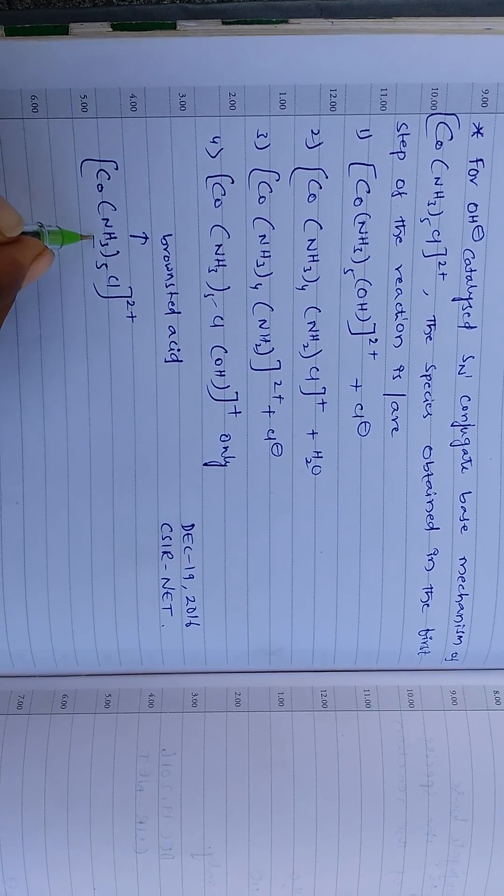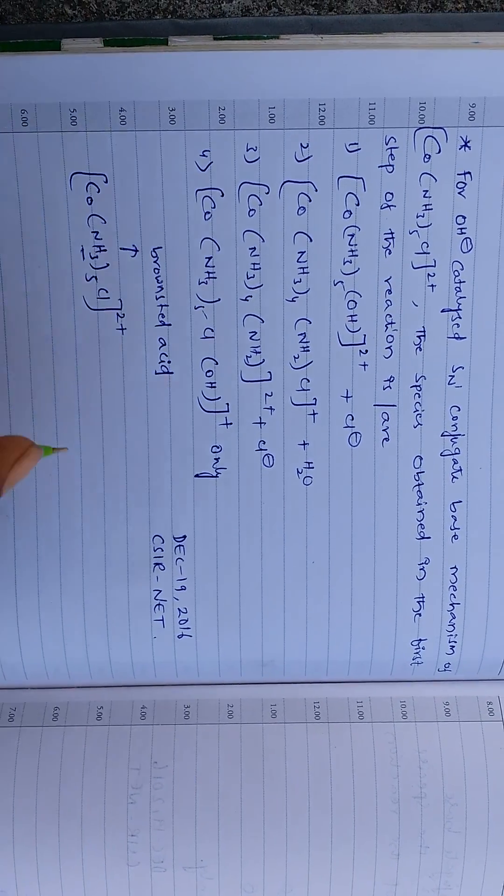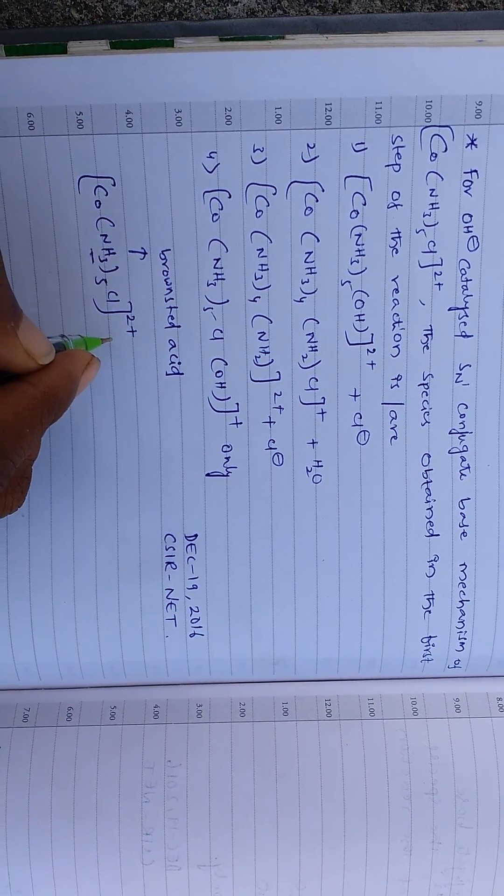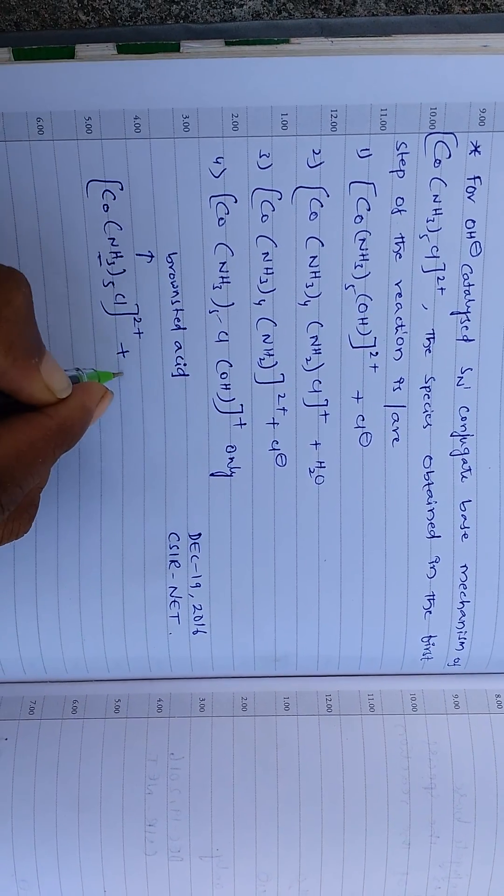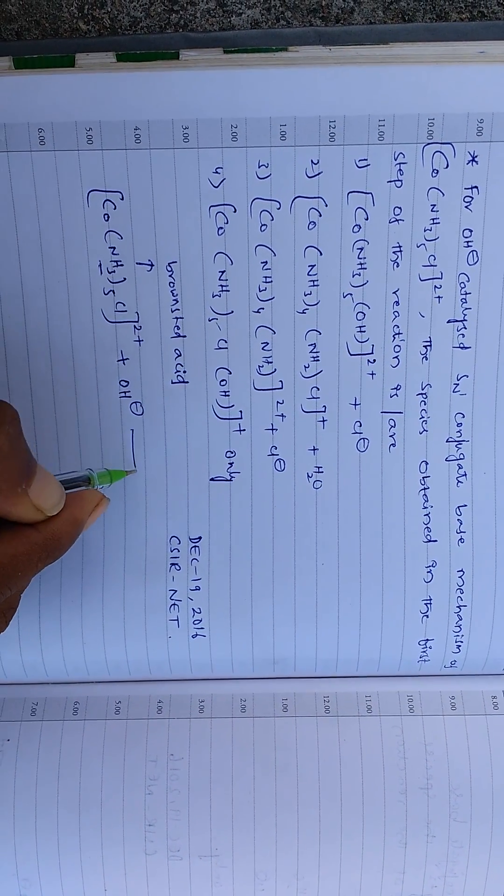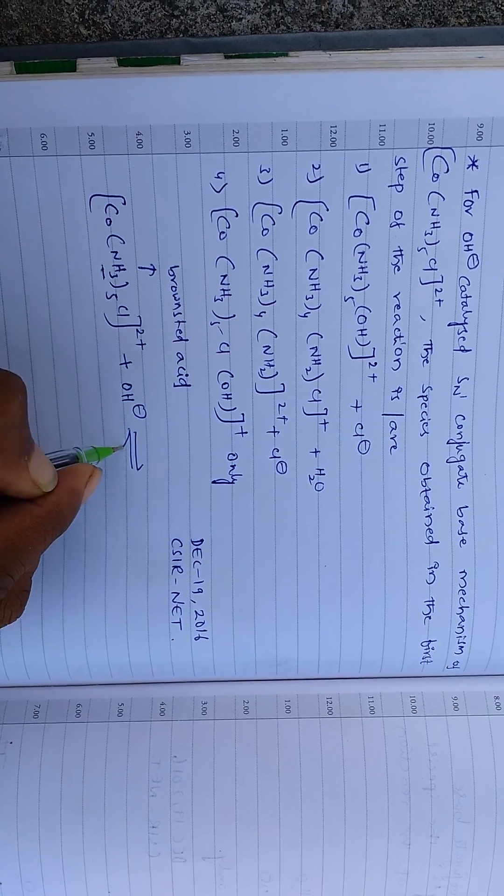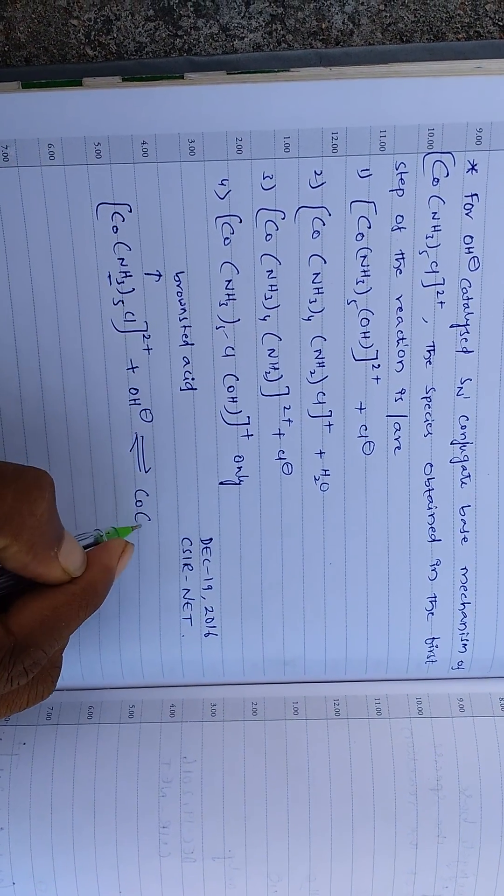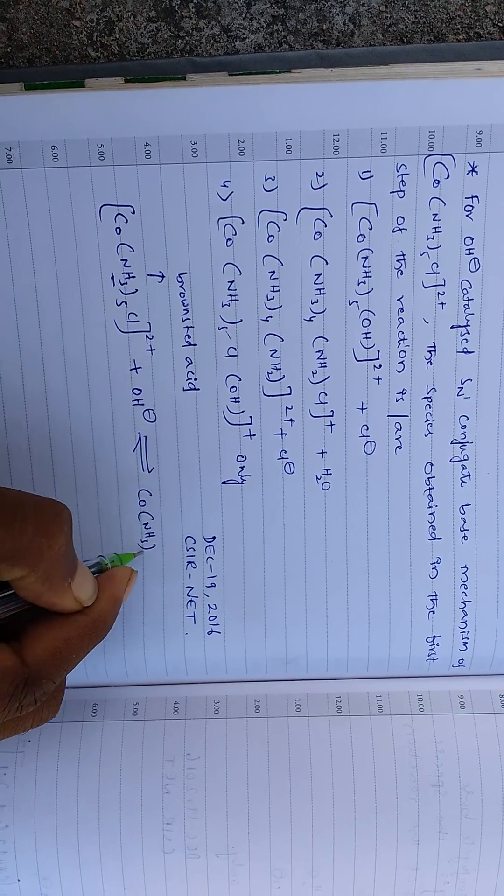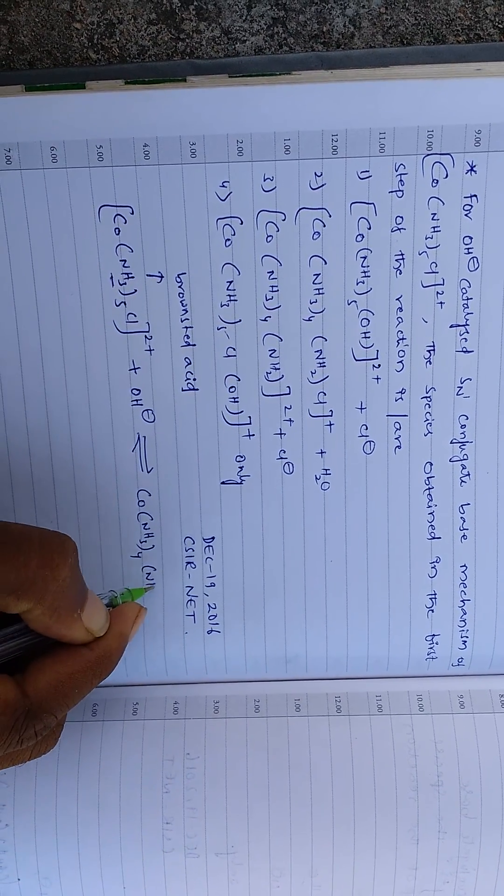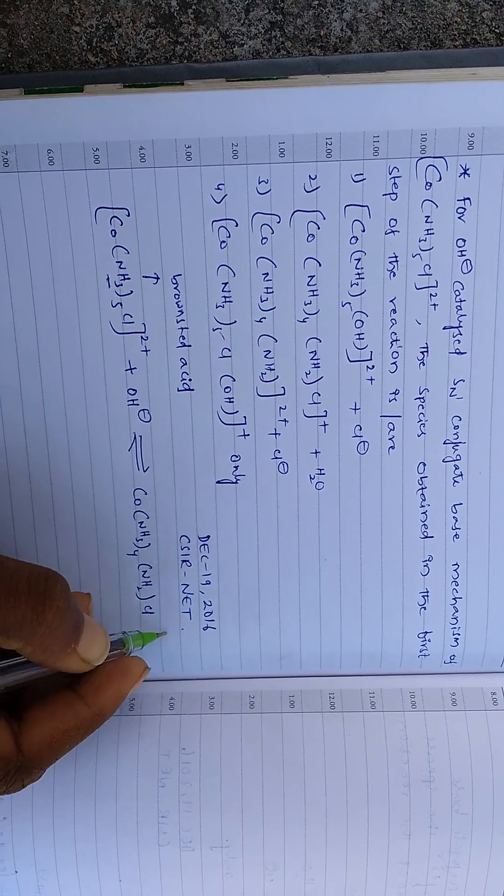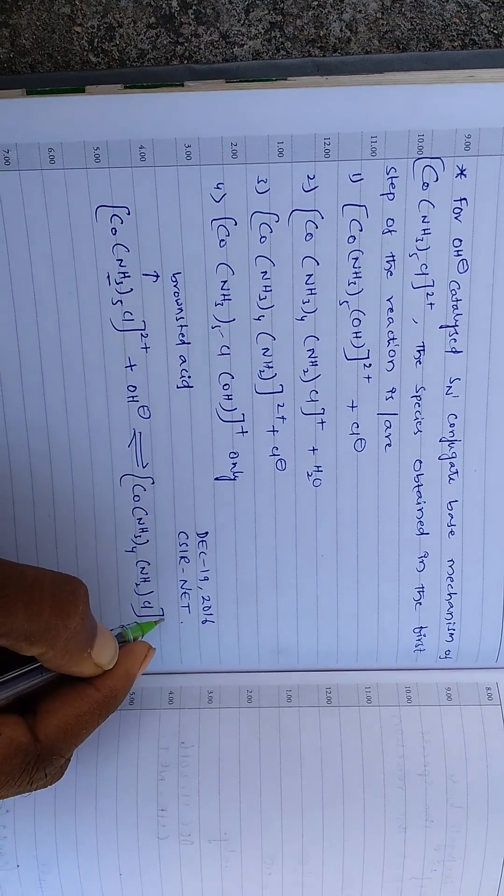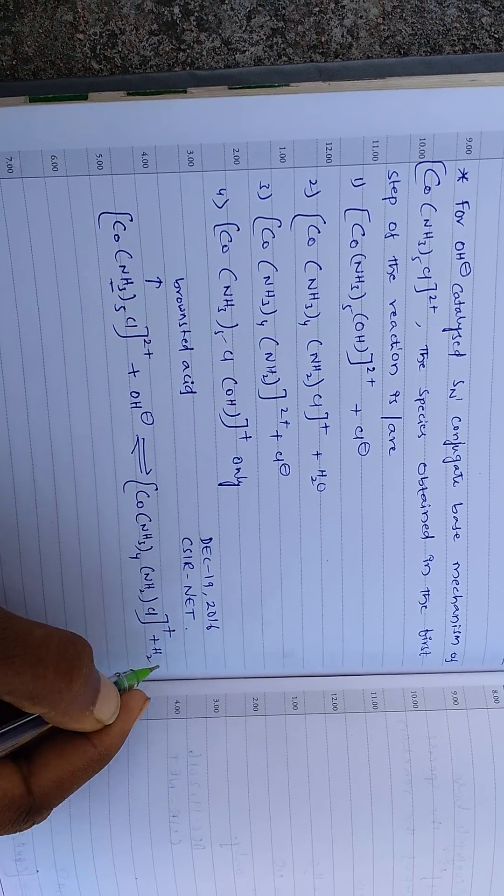So the substrate contains protons to donate. And when the substrate, Brønsted acid, reacts with base OH minus, this is a reversible reaction. And it produces Co(NH3)4NH2Cl plus plus H2O.